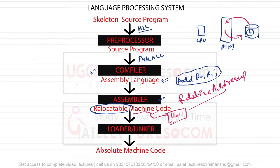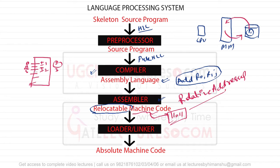Consider multiple instructions in a program. Give a relative address 0 to the first instruction I1. If I1 is two bytes, the next instruction will be at location 2. If I2 is three bytes, the next instruction will be at location 5. If I3 is four bytes, the next instruction will be at location 9, and so on. These are called relative addresses.